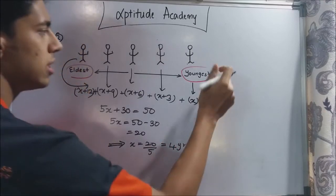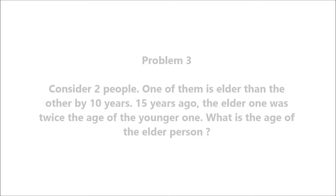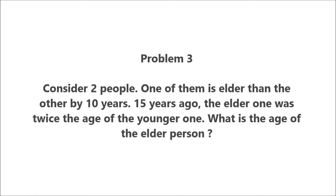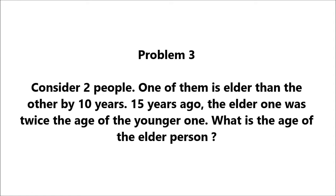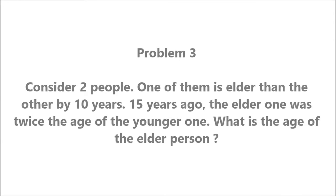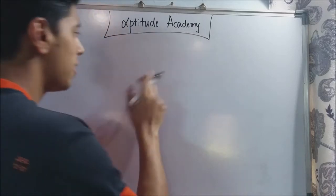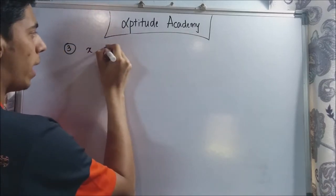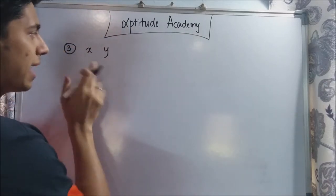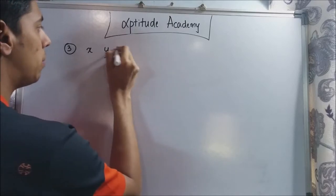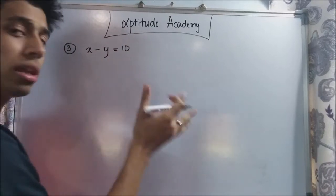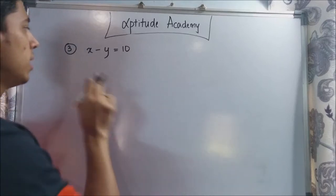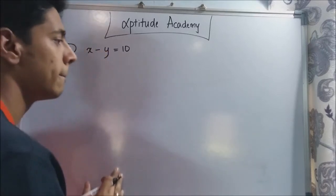Problem three: consider two people; one of them is elder than the other by 10 years. Fifteen years ago, the elder one was twice the age of the younger one. What is the age of the elder person? For this problem, we have two people x and y. The difference between their ages is 10 years, so x minus y equals 10, where x is the elder person.